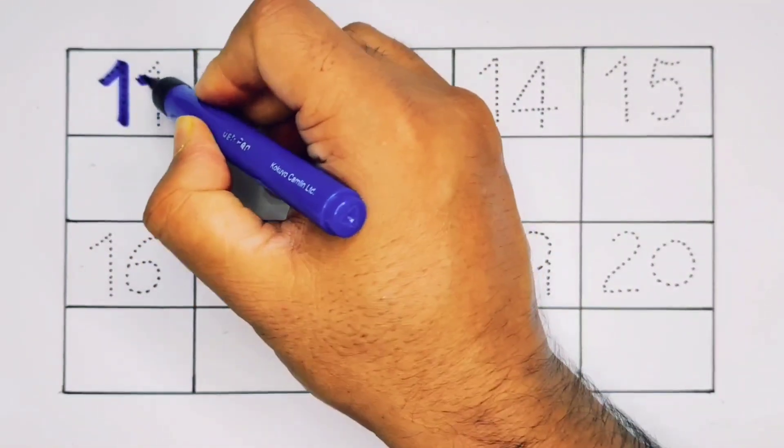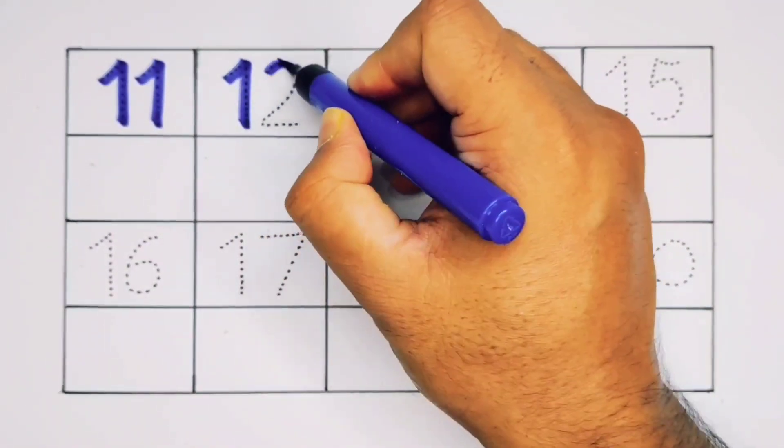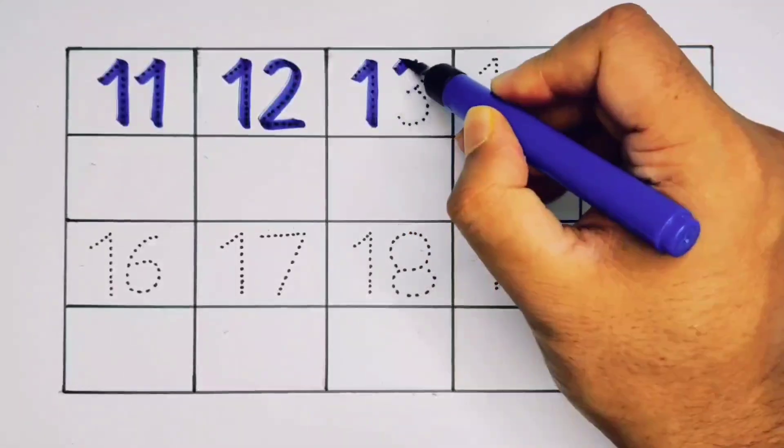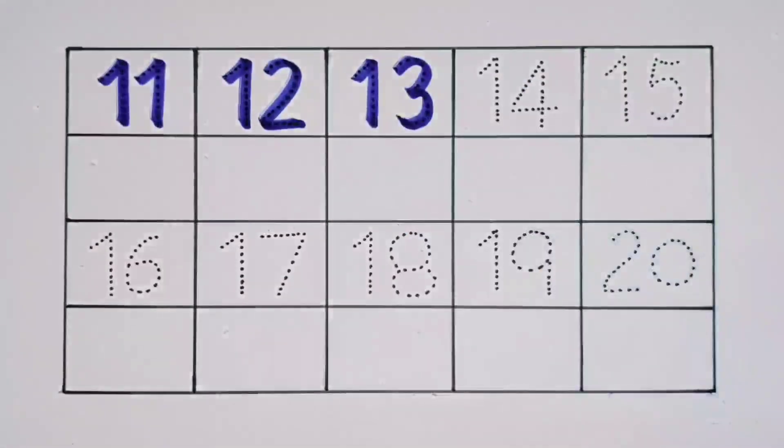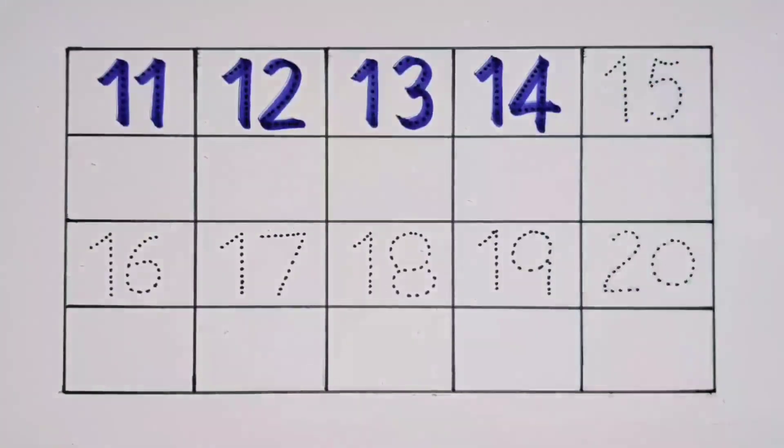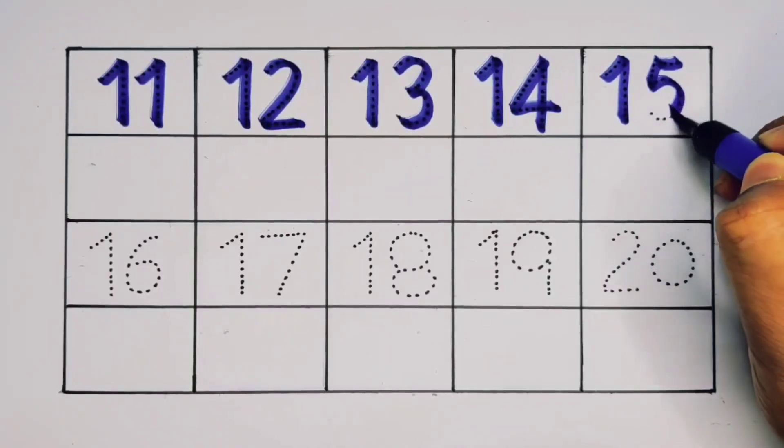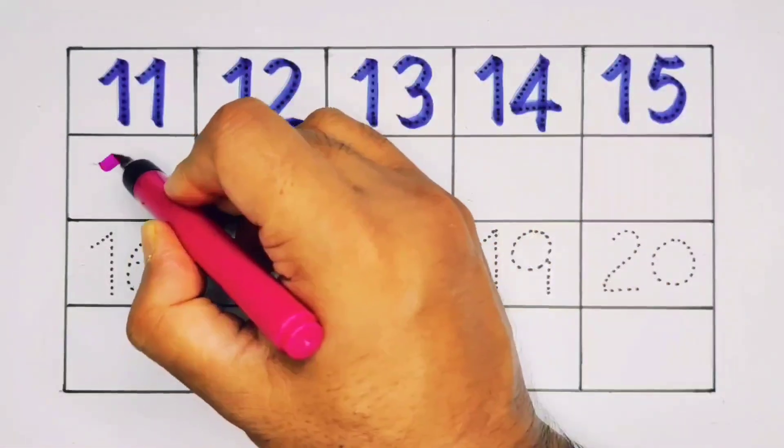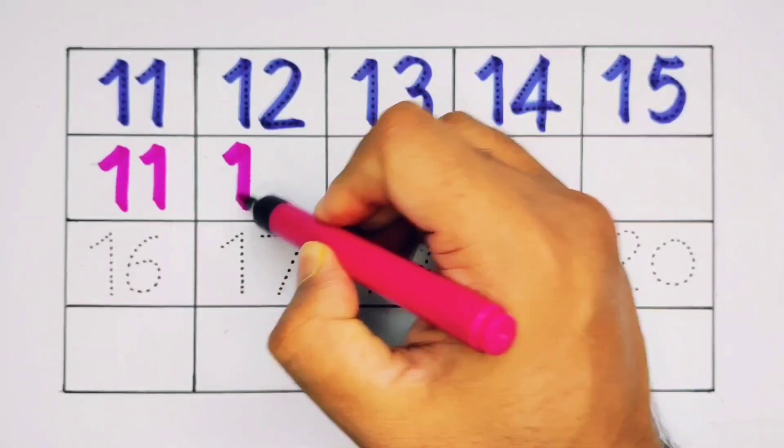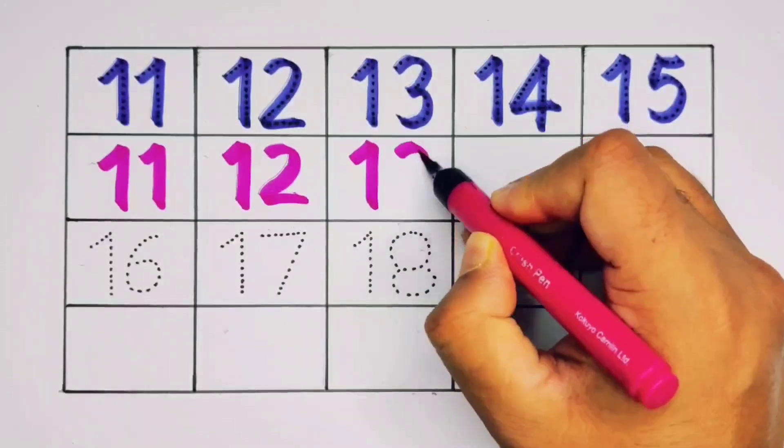One one eleven, one one eleven. One two twelve, one two twelve. One three thirteen, one three thirteen. One four fourteen, one four fourteen. One five fifteen, one five fifteen. We repeat: one one eleven, one two twelve, one three thirteen, one four fourteen, one five fifteen.